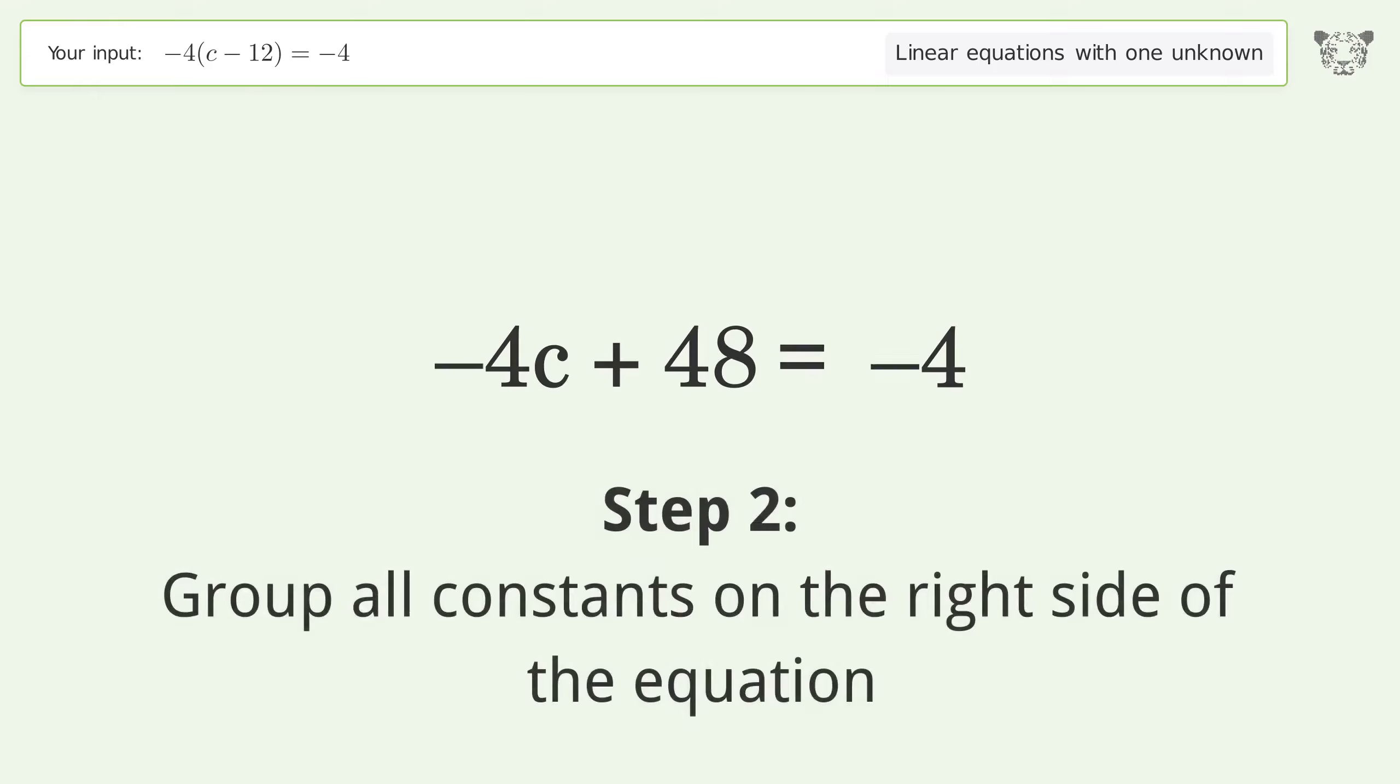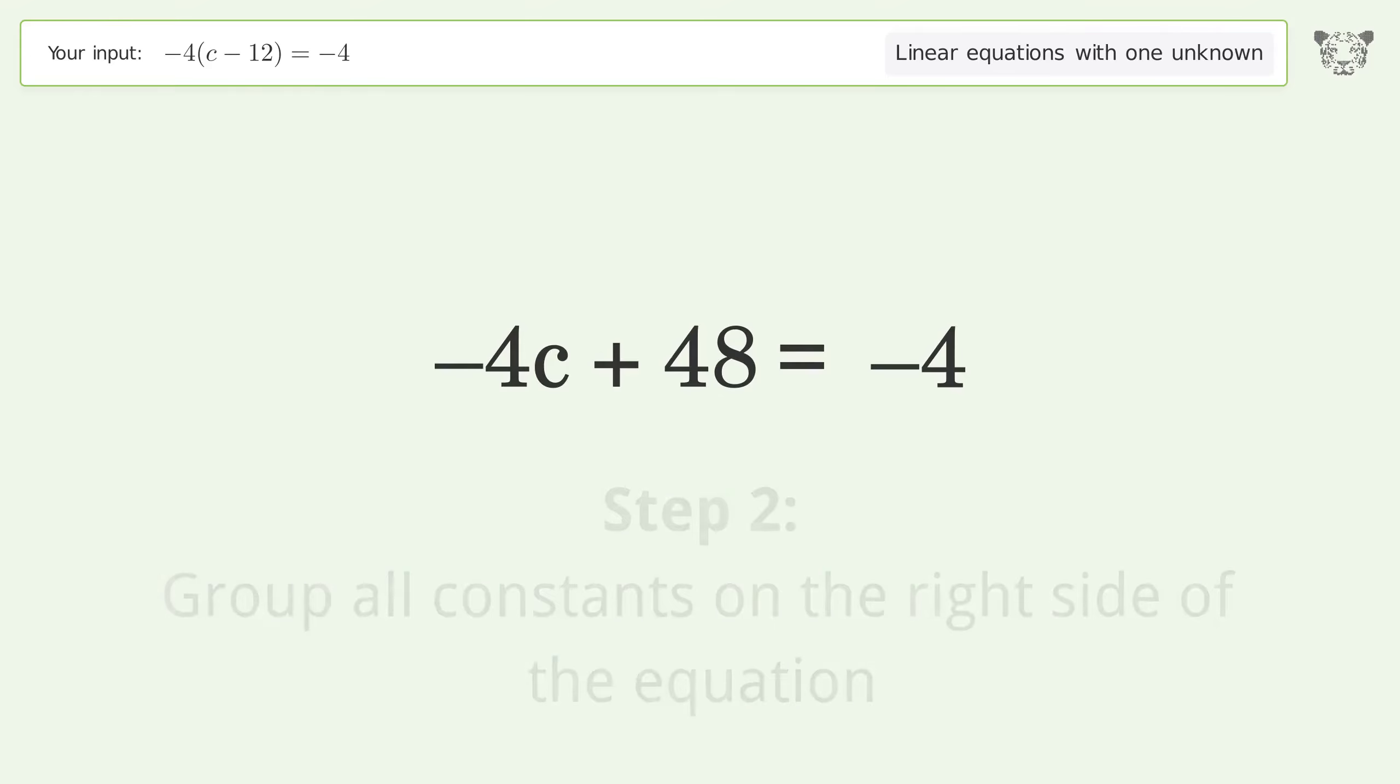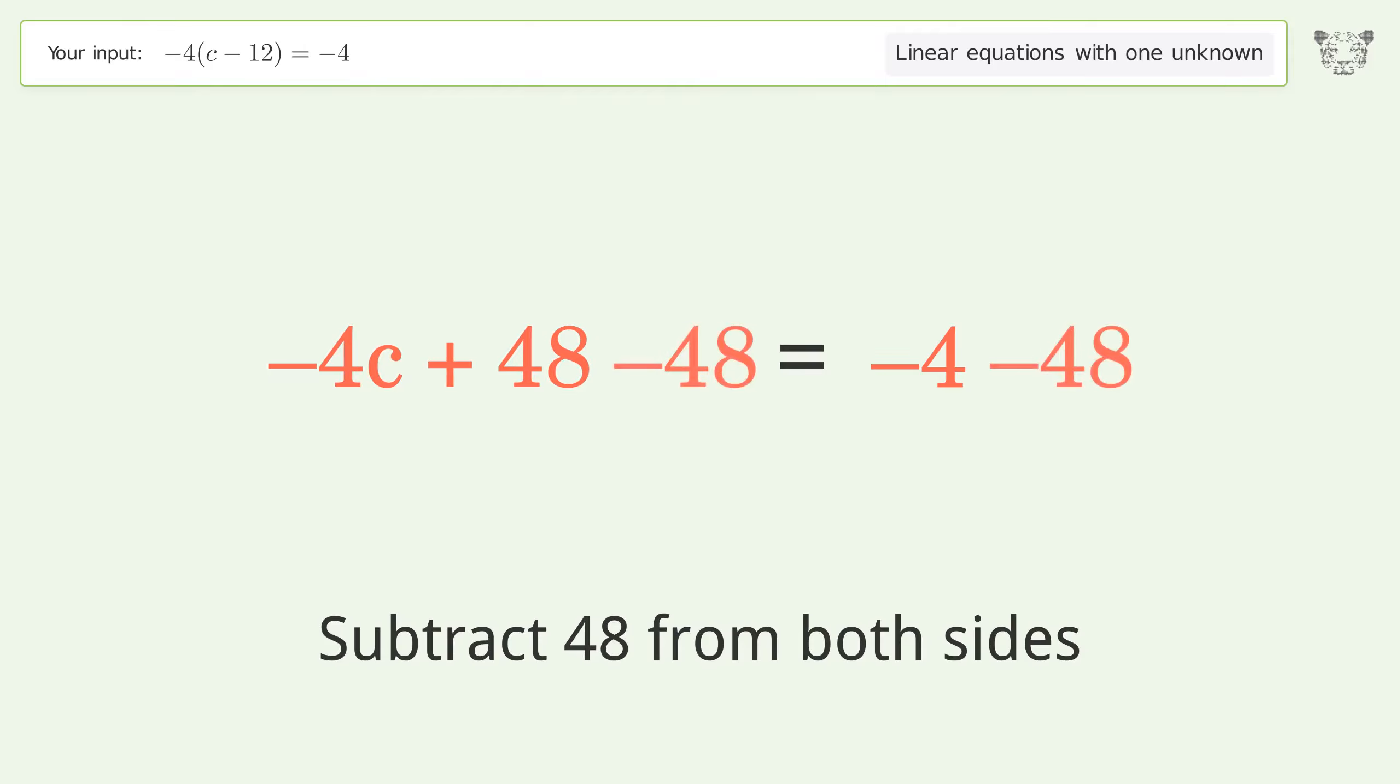Group all constants on the right side of the equation. Subtract 48 from both sides. Simplify the arithmetic.